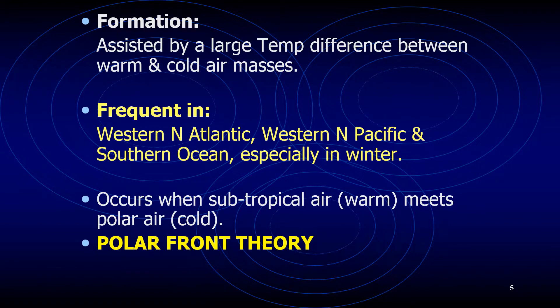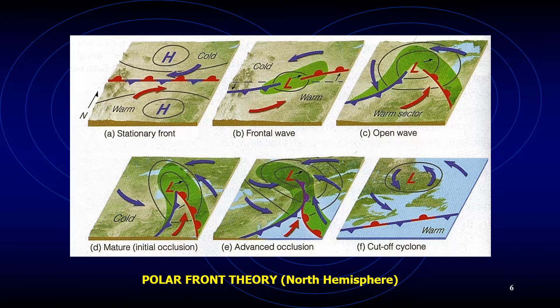The stages of a developing wave cyclone are illustrated in a sequence of surface weather maps. The first diagram shows a segment of the polar front as a stationary front, representing a trough of lower pressure with higher pressure on both sides. Cold air to the north and warm air to the south flow parallel to the front but in opposite directions, setting up a cyclonic wind shear.